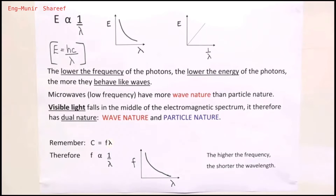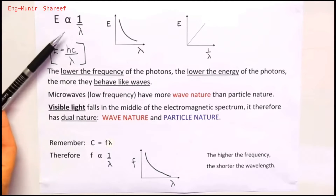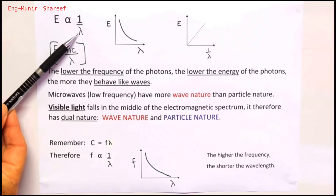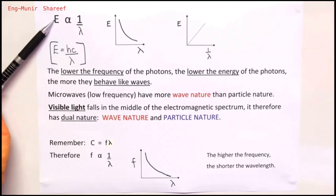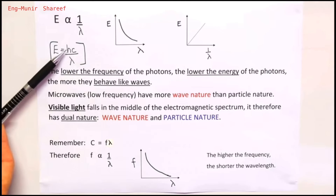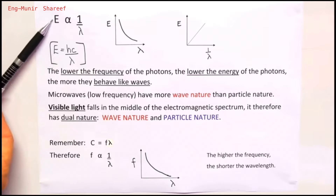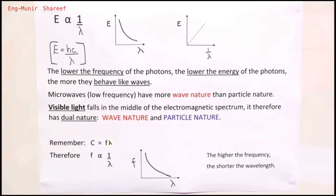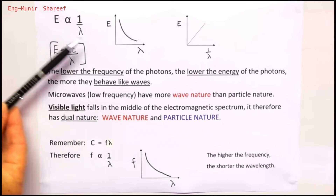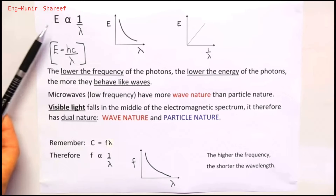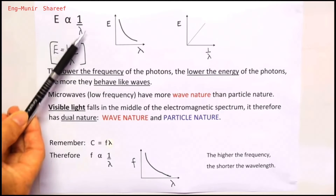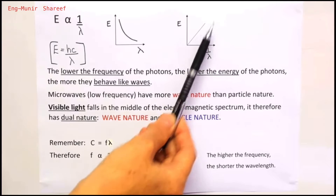We now look at the relationship between photon energy and wavelength. Gamma rays have the shortest wavelength, and the shorter the wavelength, the greater the energy of the photons. In the equation E = hC/λ, h and C are constants, so energy is inversely proportional to wavelength — use the word 'inversely,' not 'indirectly.' A graph of energy versus wavelength gives an inverse proportionality curve, but a graph of energy versus 1/wavelength gives a straight line.